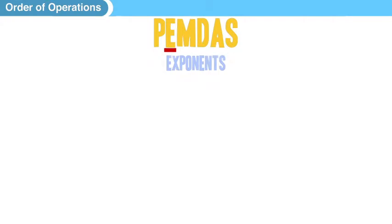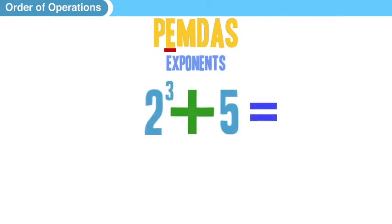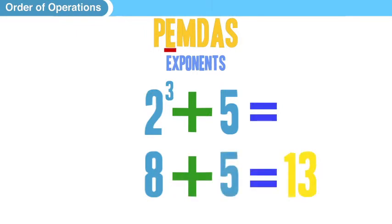Okay, let's look at the E. Exponents. We have 2 cubed, or 2 to the third power, plus 5. Well, before we can add anything, we have to take care of that exponent. So 2 to the third power is 8, and then it's just 8 plus 5, which is 13.